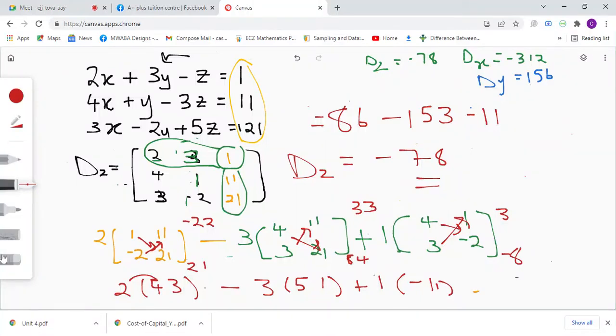All right, so now since we found our values for d, dx, dy, and dz, we're going to want to find our x, y, and z values. Dz equals negative 78.